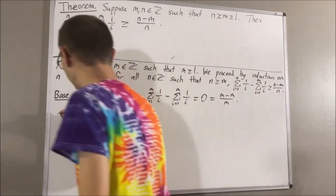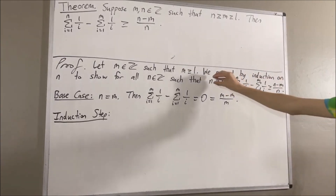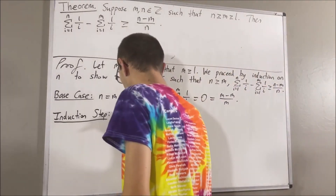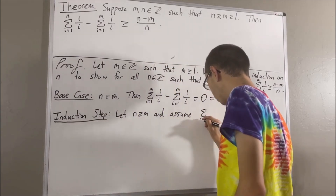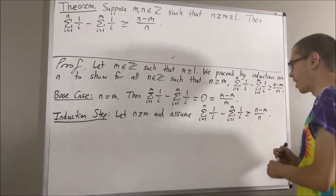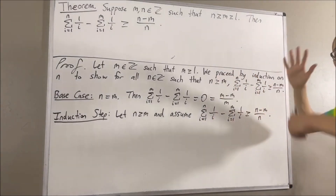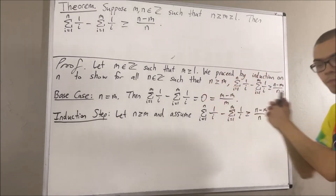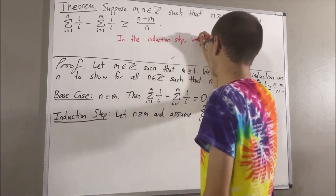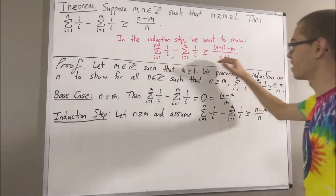Now, let's move on to the induction step. In the induction step, we give ourselves an arbitrary integer n greater than or equal to m, where this statement is true. And the whole goal of the induction step is to now show that this is also true for n plus 1. That is, we want to show that this is true.